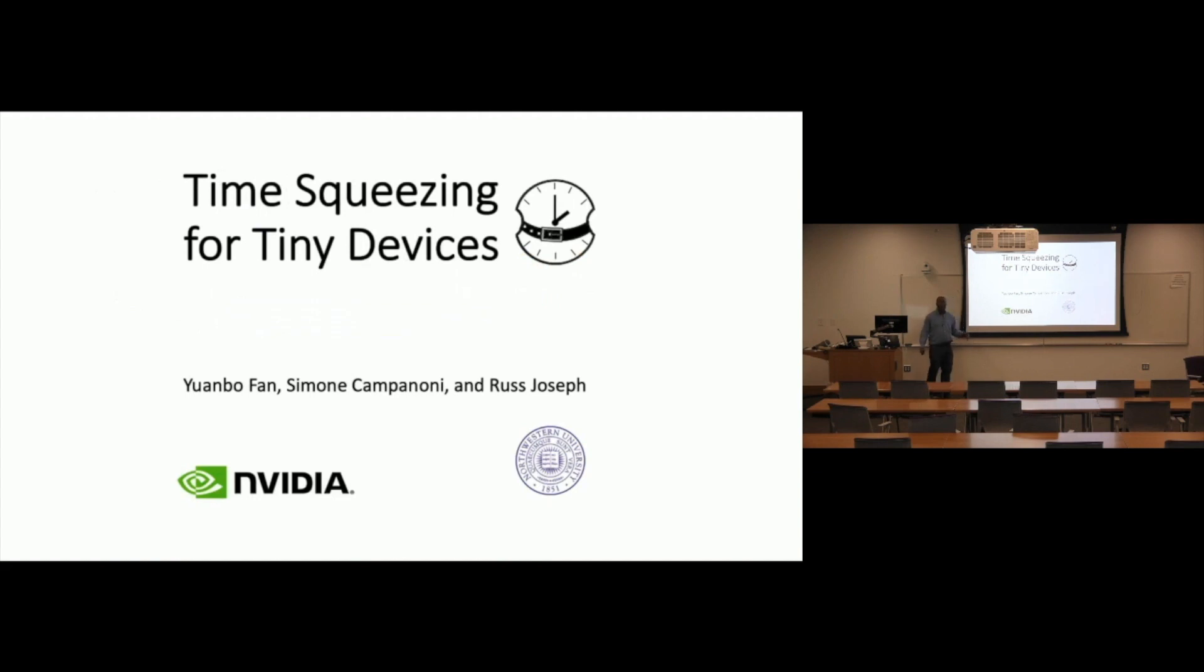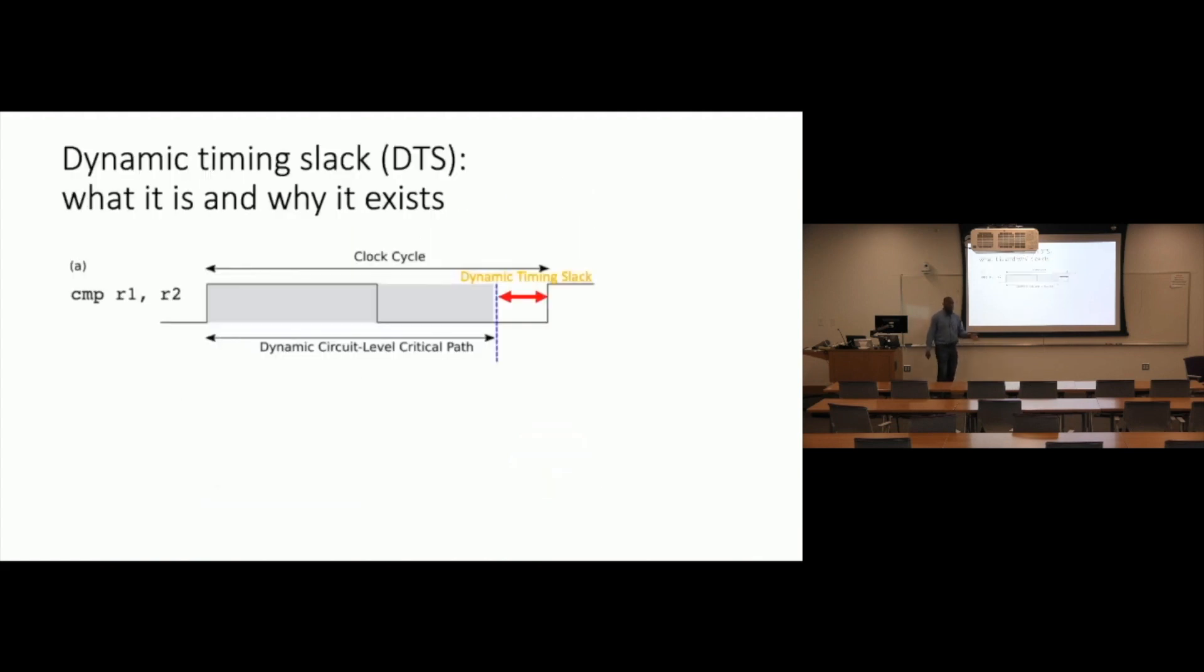Dynamic timing slack has emerged as a promising avenue towards unlocking next-generation energy saving in ultra low power embedded systems. Dynamic timing slack, or DTS, refers to the portion of the clock period that remains after signals have propagated through the logic.